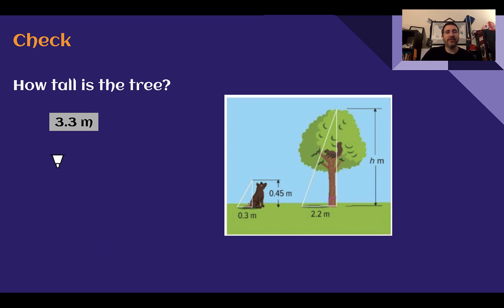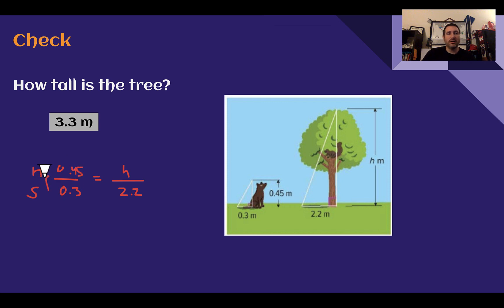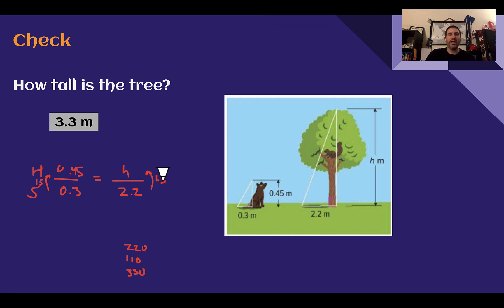To figure this out, I'm going to set this ratio up by comparing the dog to the dog and the tree to the tree. So 0.45 is the height of the dog — height on top. We want to know the height of the tree. The shadow of the dog is 0.3, and the shadow of the tree is 2.2. Going from 0.3 to 0.45, I multiplied by 1.5. So 2.2 times 1.5: that's 22 times 15. 22 times 10 is 220, and 22 times 5 is 110, giving 330 — but with two decimal places, that's 3.3. So the height of the tree is 3.3 meters.